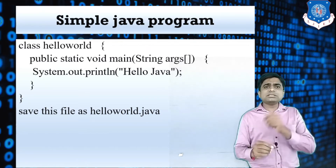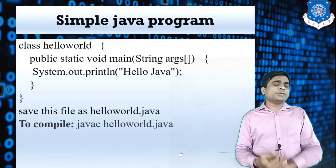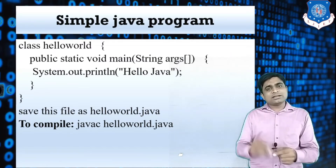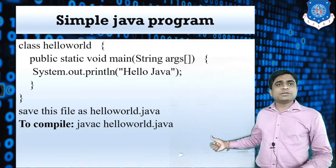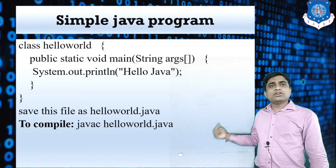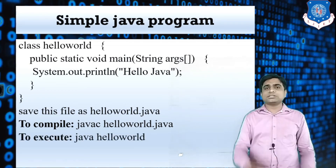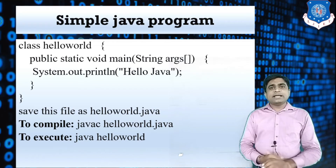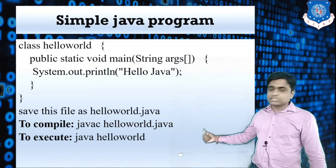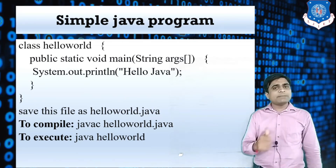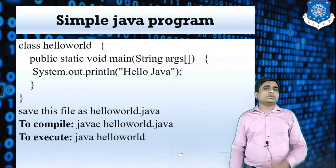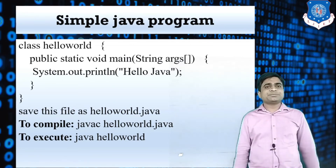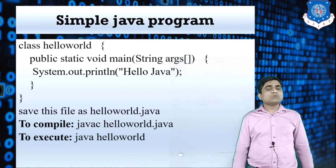When saving the file, make sure to use the same name as your class — for example, if the class name is HelloWorld, save it as HelloWorld.java. To compile the file, use the command: javac followed by the filename.java. After successful compilation with no errors, a .class file is generated. To run the program, type java followed by only the filename — without the .java extension. You will then get the output printed from System.out.println.